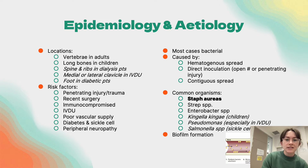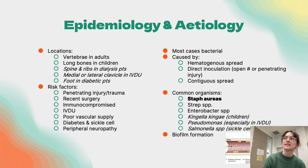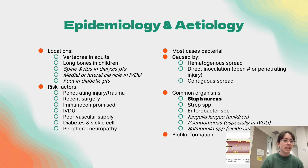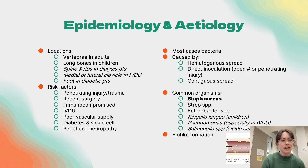The locations commonly affected include vertebrae in adults and long bones in children. In different high-risk patient groups, there are other locations as well. Risk factors include penetrating injury or trauma, recent surgery, immunocompromised status, IV drug use, poor vascular supply, systemic diseases such as diabetes and sickle cell, and peripheral neuropathy.